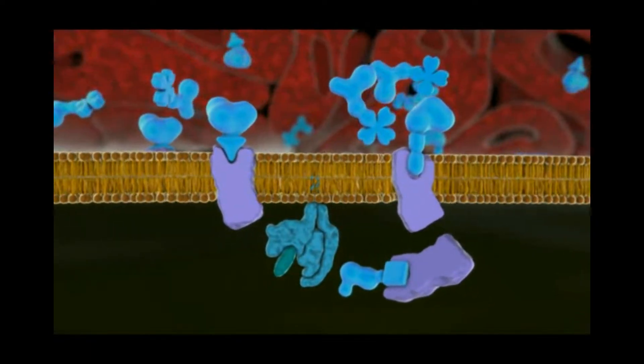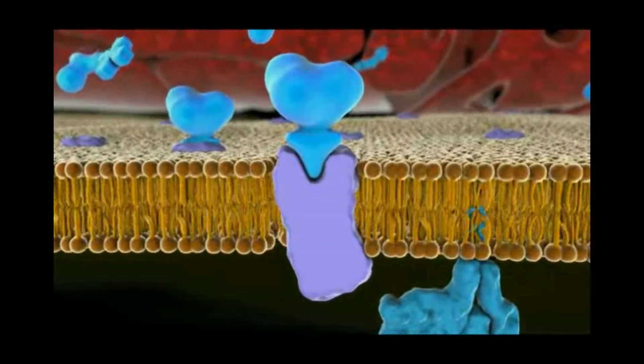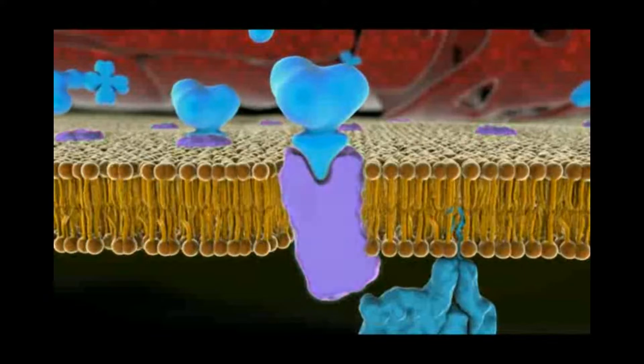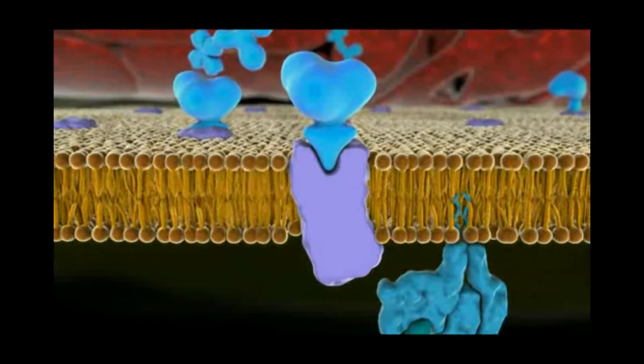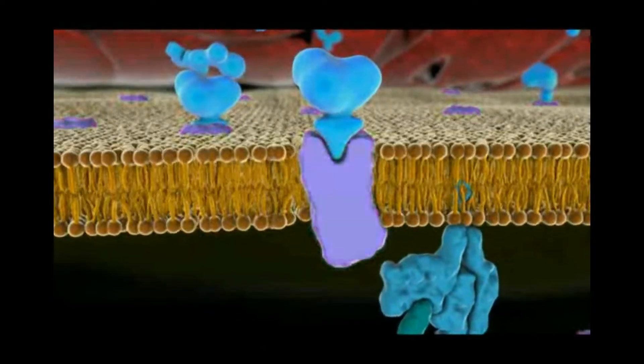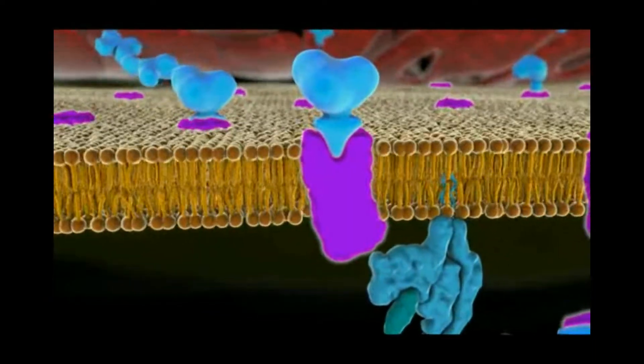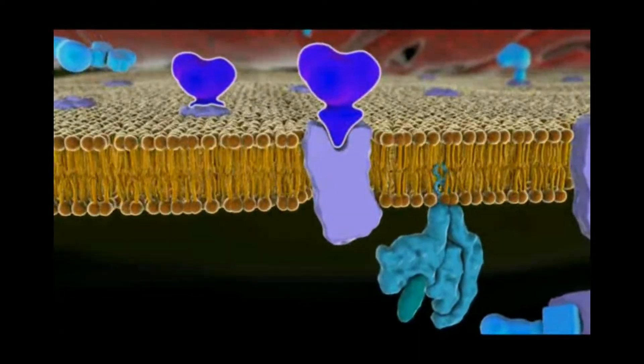Although cells express a variety of receptors, we'll focus on one particular class: receptors that bind water-soluble hormones and exert their effects through the intracellular second messenger cyclic AMP. These receptors are embedded in the cell's plasma membrane because water-soluble hormones cannot enter the target cell directly.